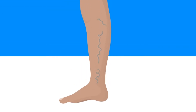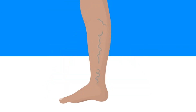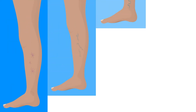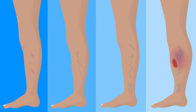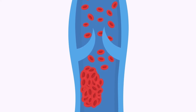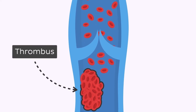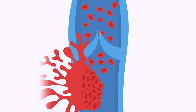Varicose veins are important because of potential complications. If not treated, the disease can progress up to a point of forming ulcers on the legs. Although not so frequently, a thrombus, more commonly known as a blood clot, can develop in these veins. And from time to time, they can even rupture.